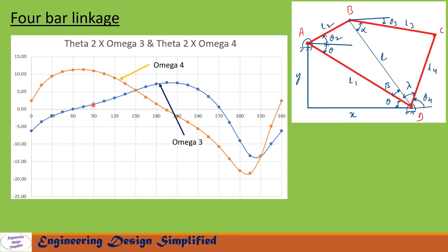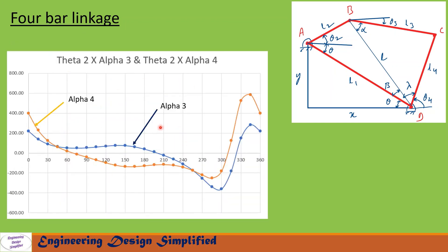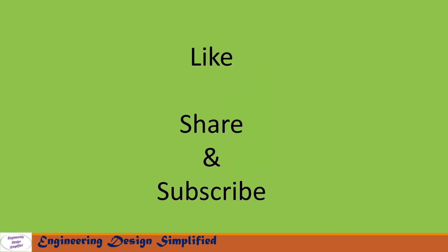The third graph plots theta2 versus omega3 and omega4 — angular velocities — from 0 to 360 degrees. The blue curve is omega3 and the yellow curve is omega4. The fourth graph plots theta2 versus alpha3 and alpha4 — angular accelerations — where the blue curve is alpha3 and the yellow curve is alpha4, showing their variation with respect to theta2. That's all for today's video; if you like this content please like, share, and subscribe. Thanks for watching.